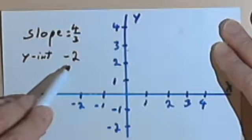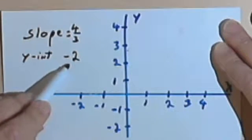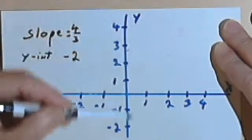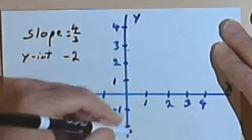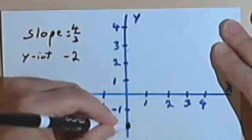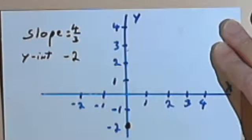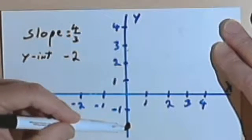Okay, so the first thing we're going to do is find the y-intercept. All that means is we're looking on the y-axis and we want to find negative 2. So the y-intercept is right here. Now from that we know that our line is going to go through this point.